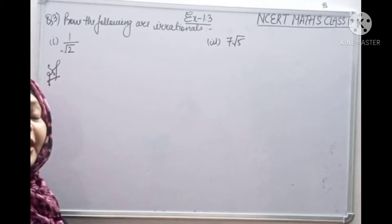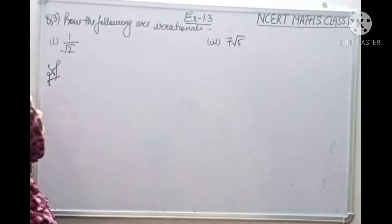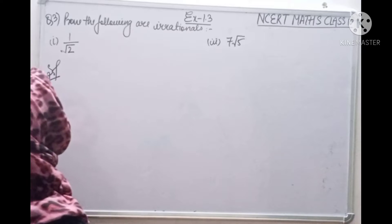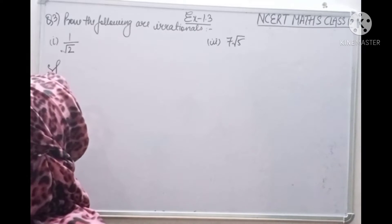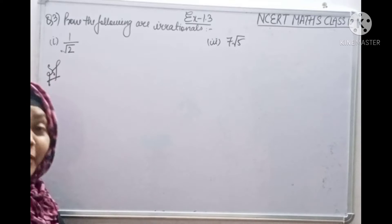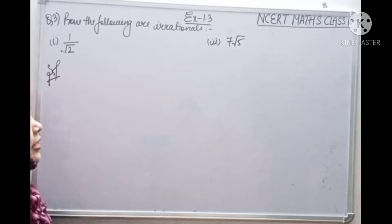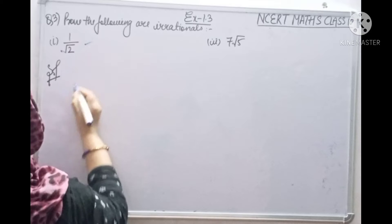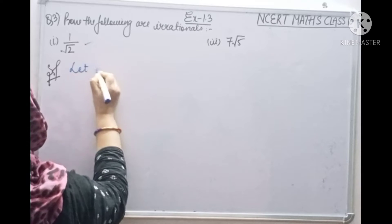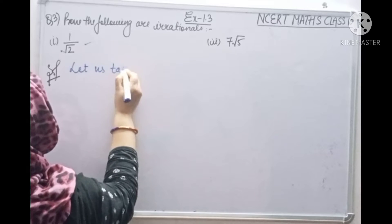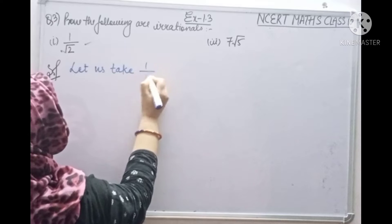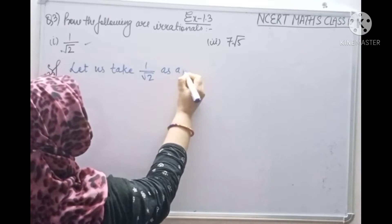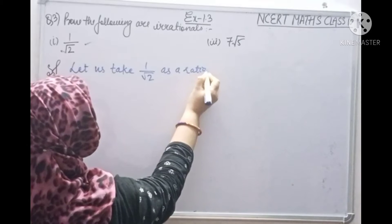We have to prove that 1 by root 2 is irrational. So how do we do it? We will assume that this is rational. Let us take 1 by root 2 as a rational.